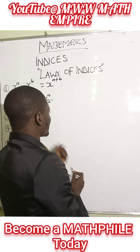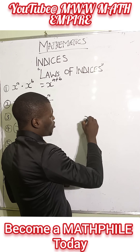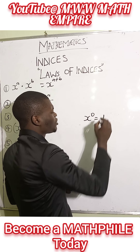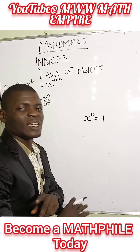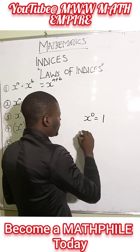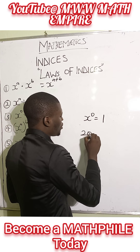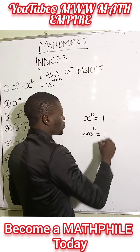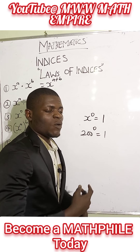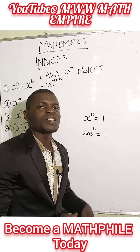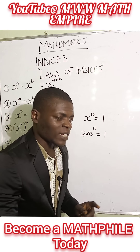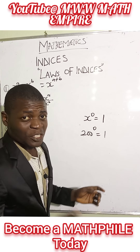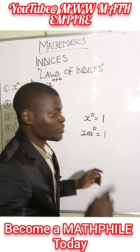We have the third one: x raised to the power of 0. Anything raised to the power of 0 is 1. Even if you have 200 raised to the power of 0, it's going to be 1. 1,000,000,000 raised to the power of 0 is 1. So do not be afraid of anything raised to the power of 0.